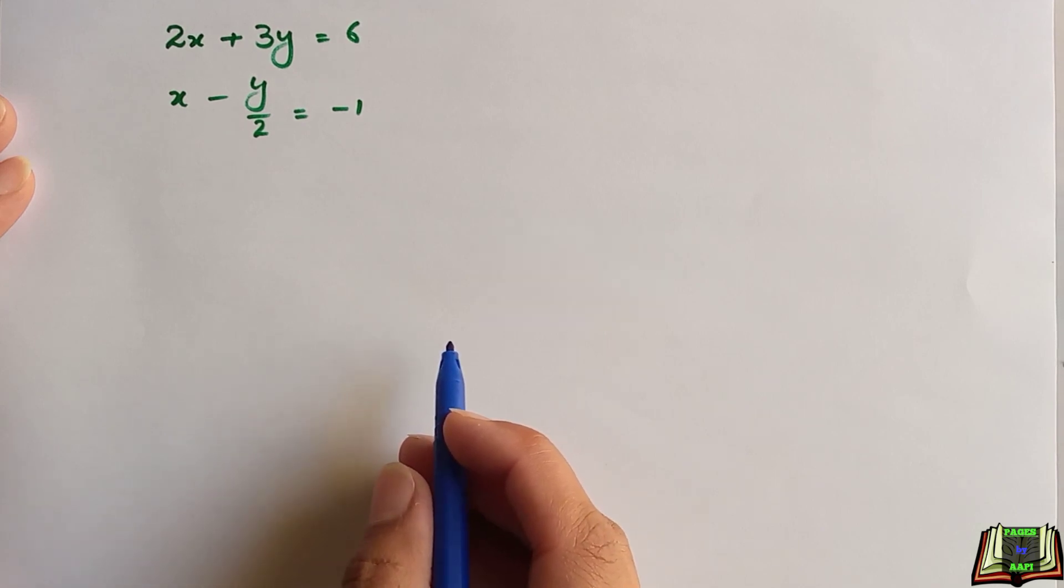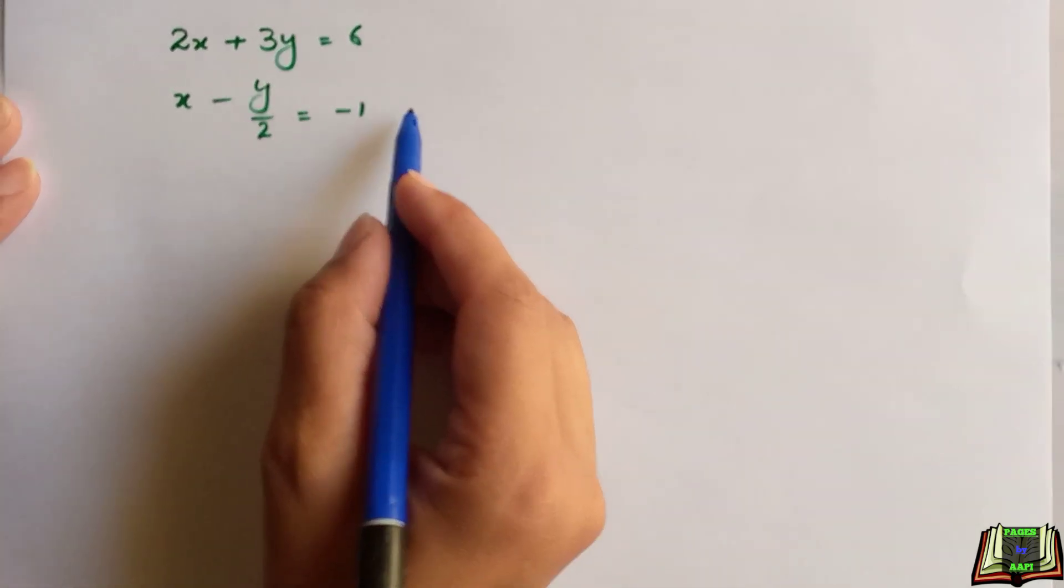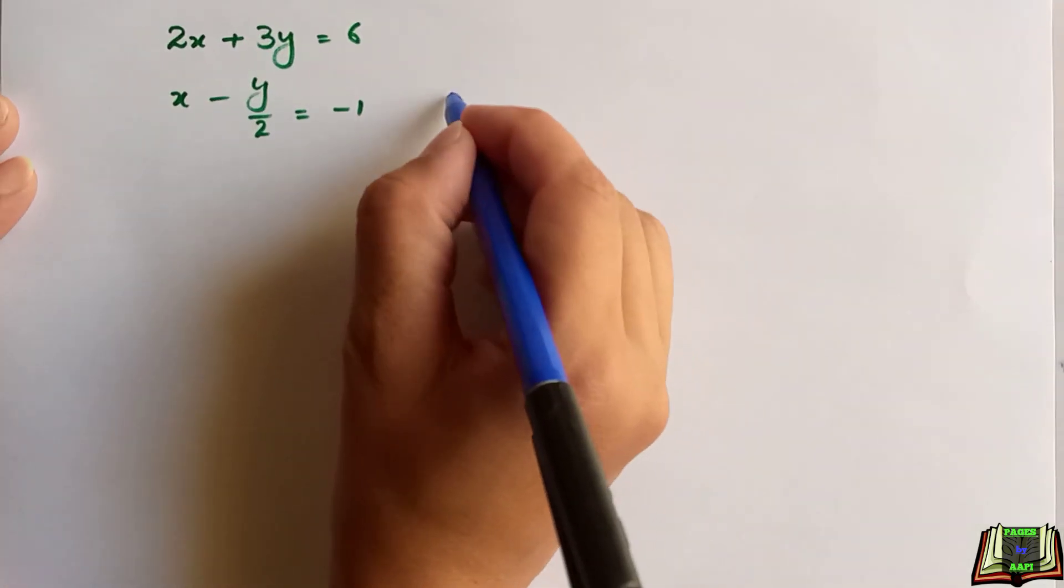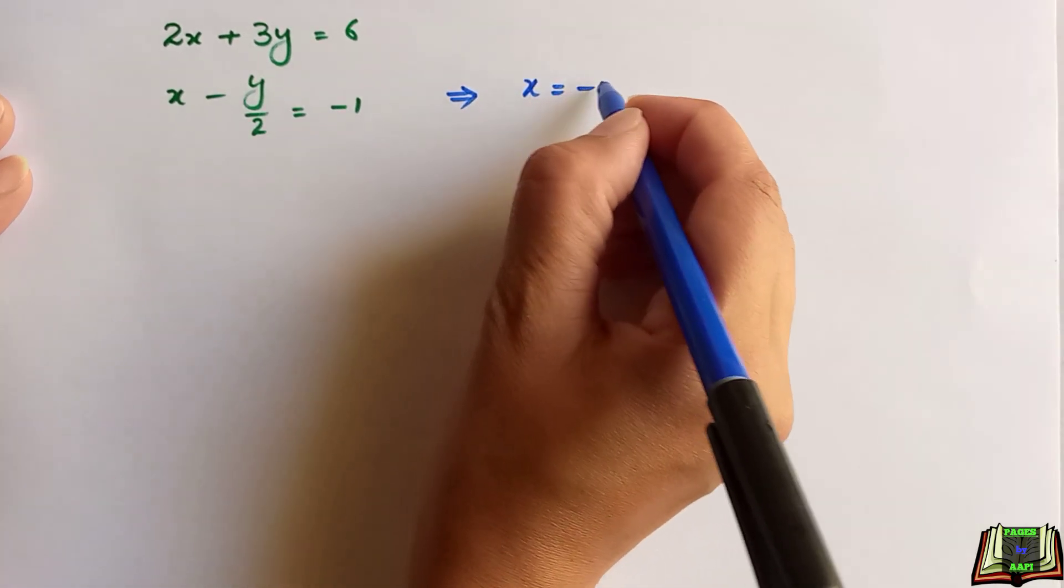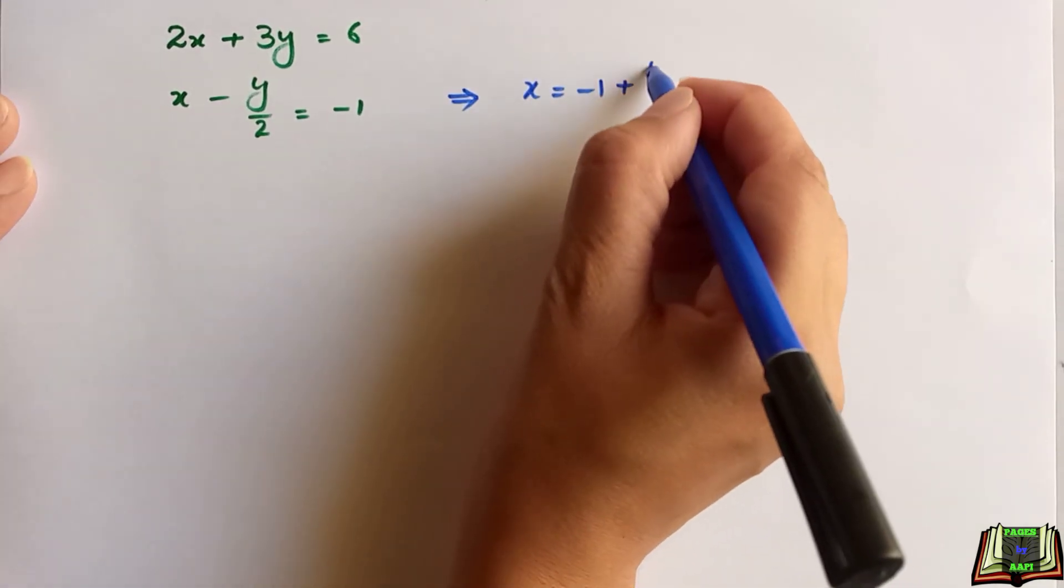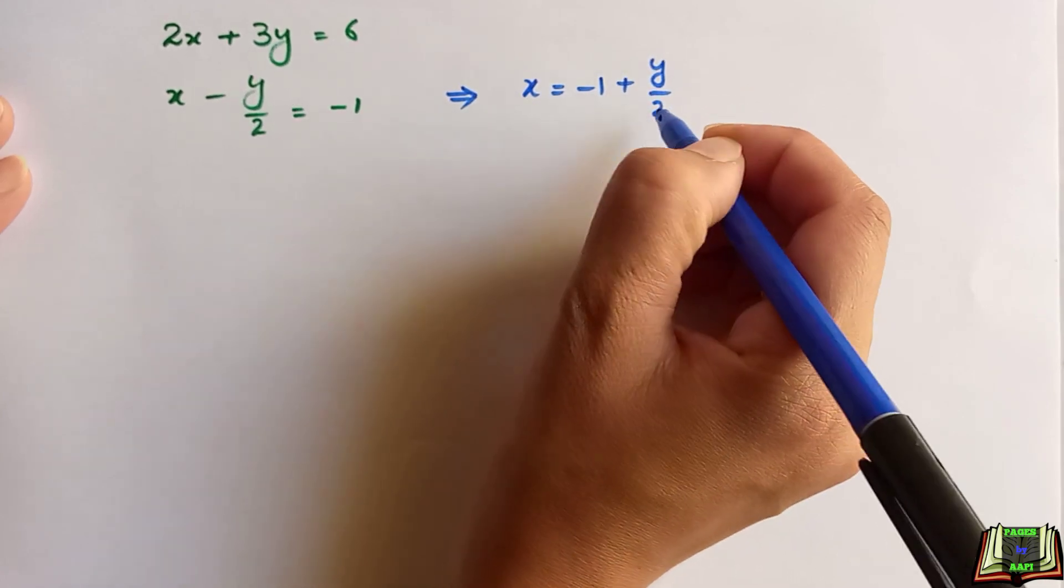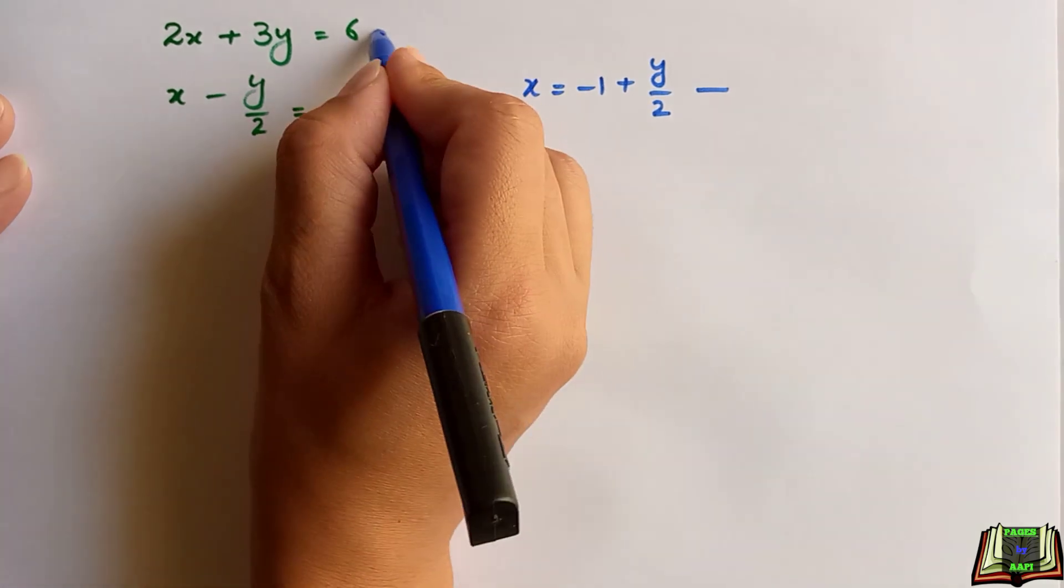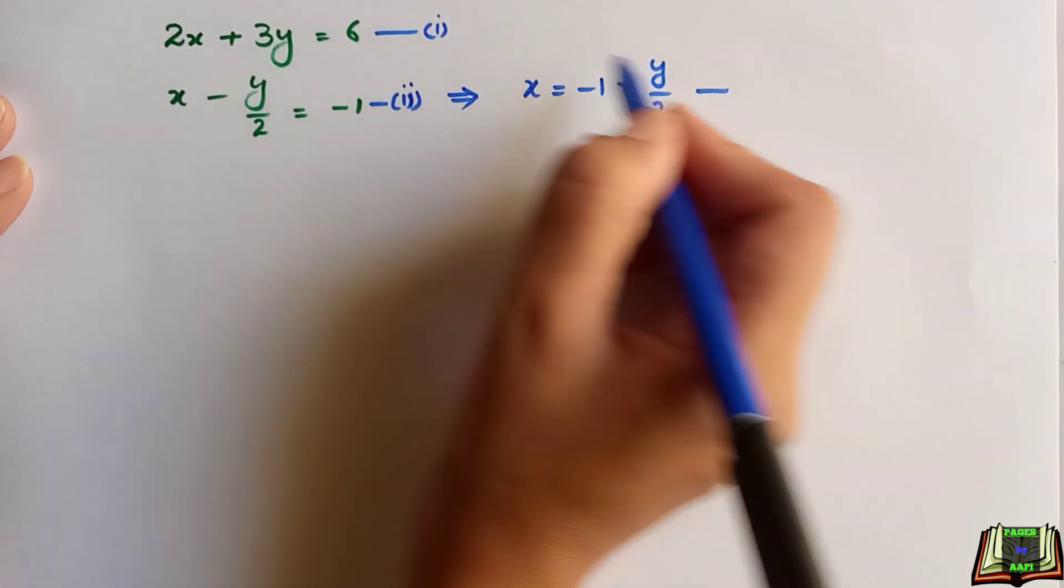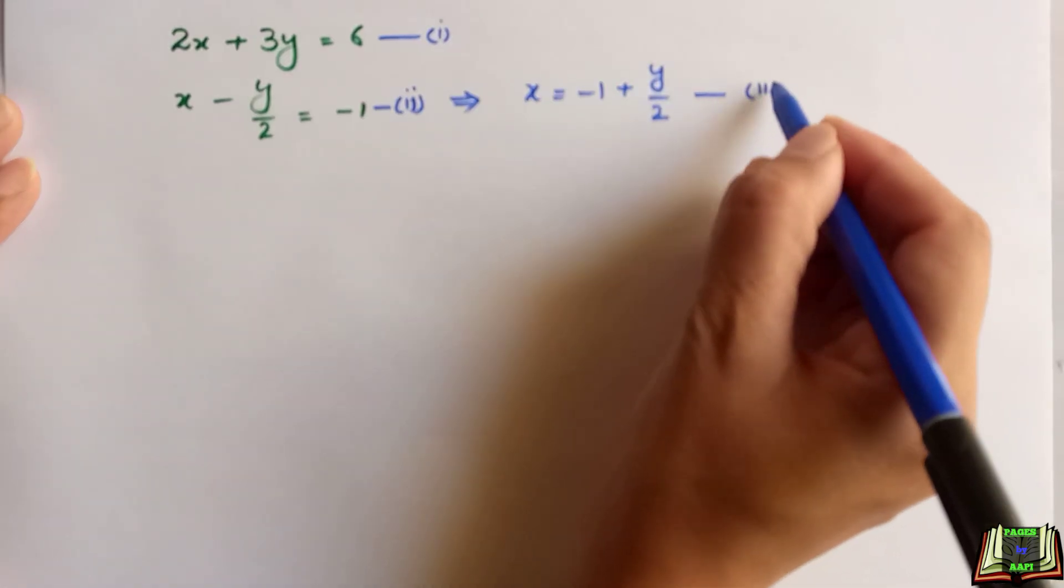I will take one of the equations, like this equation, and isolate the variable x from there. So x will be equal to -1 + y/2. Let's name this equation as equation 2, this as equation 1, and this new equation as equation 3.